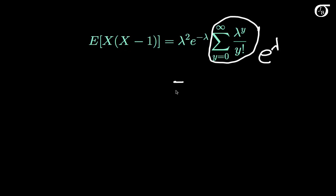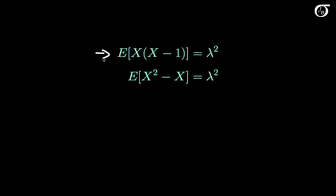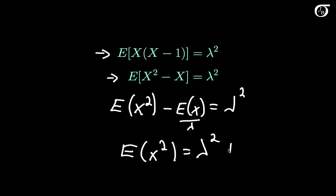So the expectation of x times x minus 1 is equal to lambda squared times e to the minus lambda times e to the lambda. These two multiply to give 1, so the expectation of x times x minus 1 equals lambda squared. This implies the expectation of x squared minus x equals lambda squared, and by linearity of expectation, the expectation of x squared minus the expectation of x equals lambda squared. Since the expectation of x is lambda, the expectation of x squared is equal to lambda squared plus lambda.